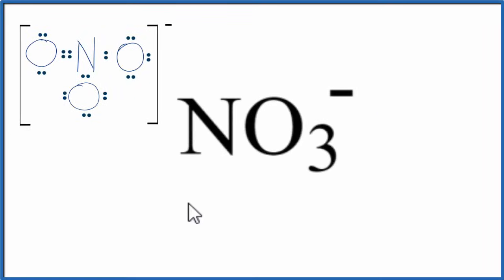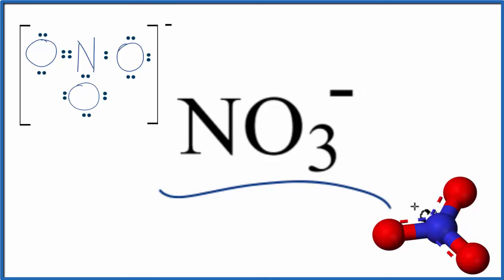In this video, we'll draw the Lewis structure for the NO3 minus ion. This is the nitrate ion. We'll also look at the molecular geometry, bond angles, and a bit about resonance.